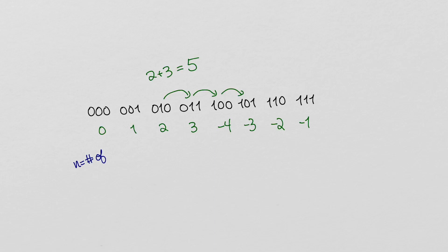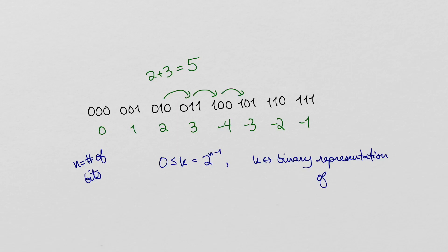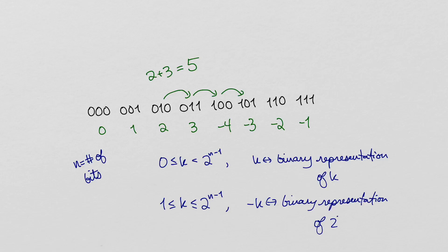To sum up this scheme: if we have n bits, then we represent the non-negative integers less than 2 to the n minus 1 as their binary representation, and we represent the negations of the numbers from 1 to 2 to the n minus 1 by subtracting from 2 to the n.